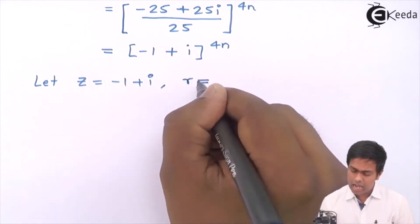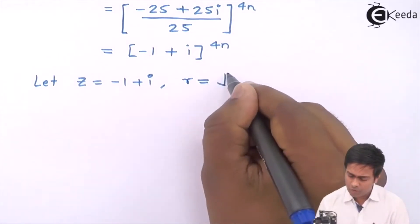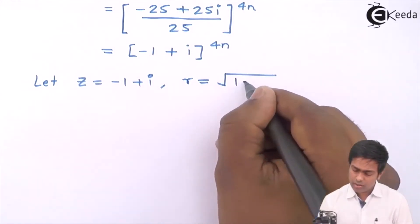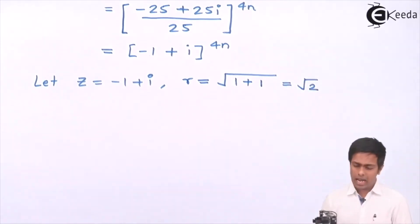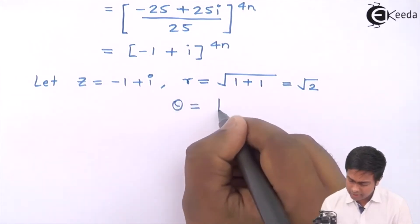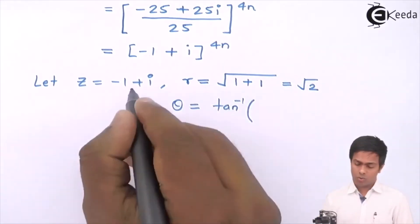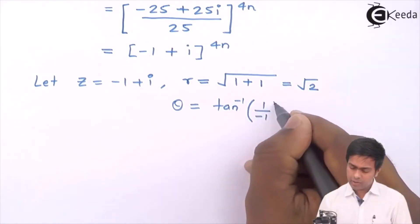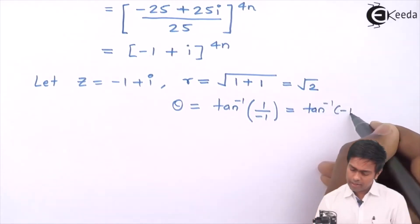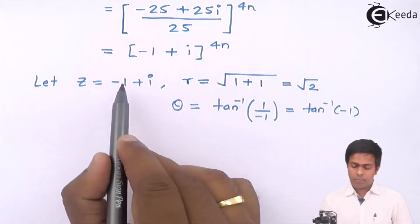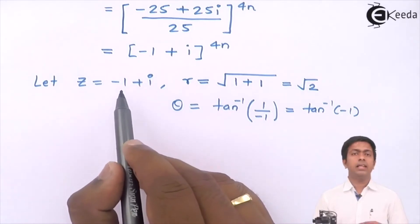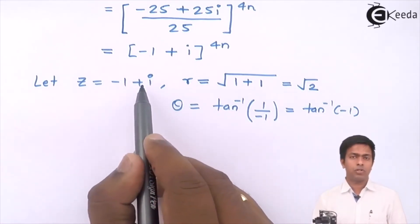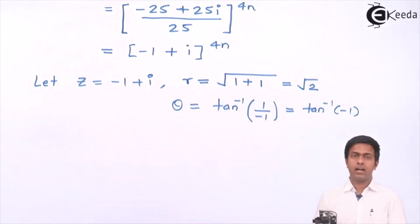For z = -1 + i, we need r and θ. Here r = √(x² + y²) = √((-1)² + 1²) = √2. And θ = tan⁻¹(y/x) = tan⁻¹(1/(-1)) = tan⁻¹(-1). Plotting -1 + i on a coordinate system, the number lies in the second quadrant because x is negative and y is positive, so θ must be between 90° and 180°.